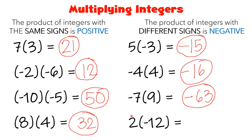For the last one, we have 2 times negative 12. They have different signs, so your answer must be negative. 2 times 12 is equal to 24, giving negative 24. Again, let's recall: if they have the same sign, your answer is positive. If they have different signs, your answer must be negative.